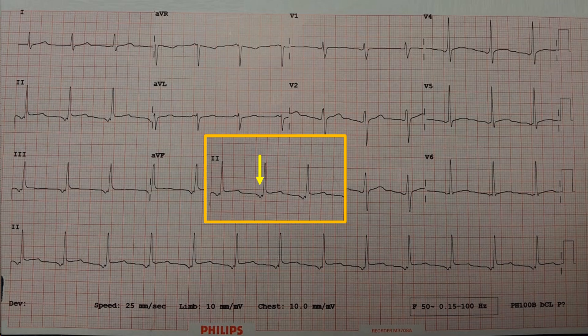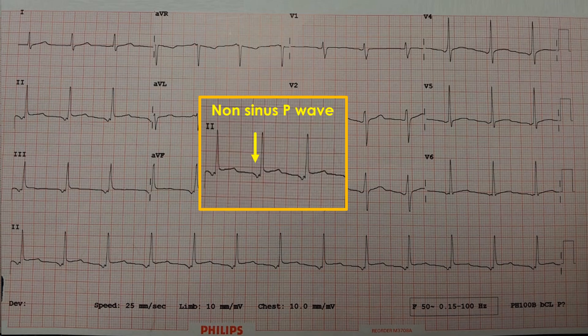We always need to see the ECG as a whole, and that's why it is important to look at all findings. Let's start with the P waves. We can see that these P waves are inverted in the inferior leads — which are II, III, and aVF — and these are upright in lead aVR. We should consider: is this patient in sinus rhythm or not?